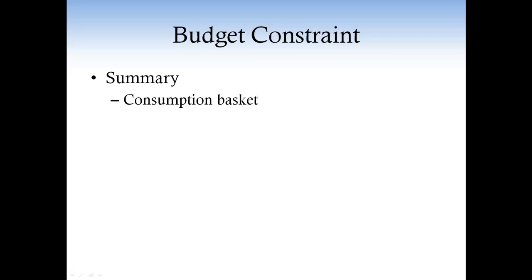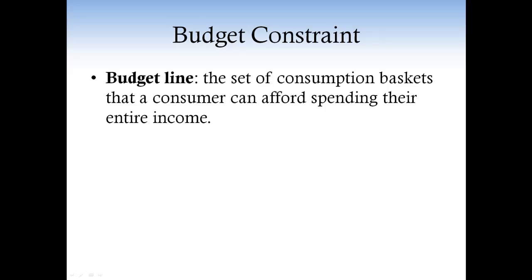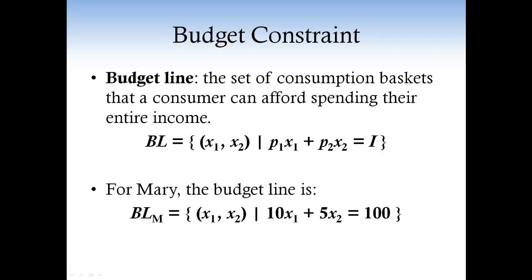We learned two basic concepts of consumer theory: what is a consumption basket and what is a budget constraint. A very important related concept is the budget line. The budget line is the set of consumption baskets that the consumer can afford spending all their income. The only difference between the budget constraint and the budget line is that the inequality becomes an equality, since the budget line gives us all the baskets in which the consumer spends all the income.